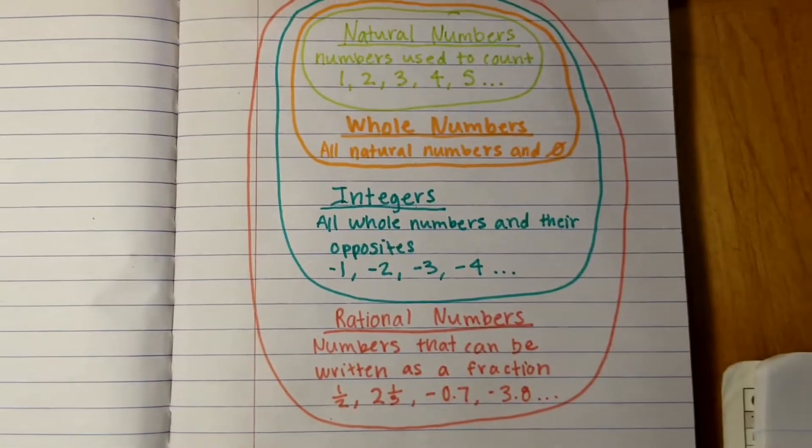Remember, some numbers can be in multiple classifications. For example, the number three — yes, it is a rational number and an integer, but it's best classified as a natural number. So you want to make sure to put the number in the best classification, because some numbers work for many different classifications.